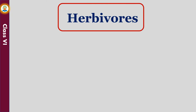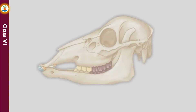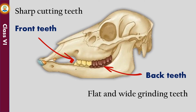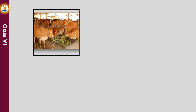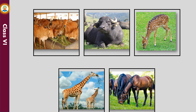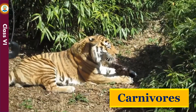Animals that eat only plants are called herbivores. Herbivore is a Latin word in which 'herba' means vegetation and 'vore' means to eat. Herbivores have two types of teeth: sharp cutting teeth at the front and flat wide grinding teeth at the back of their jaw. Examples of herbivores include buffalo, deer, horse, and giraffe. Also, many birds are herbivores.